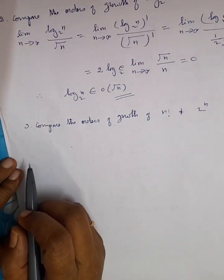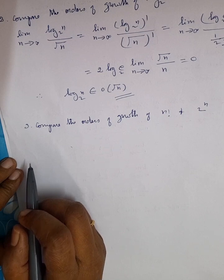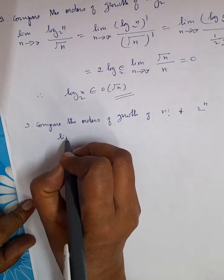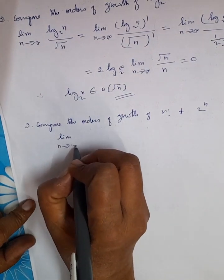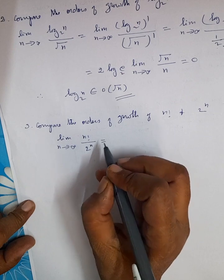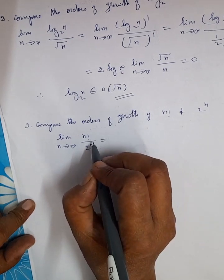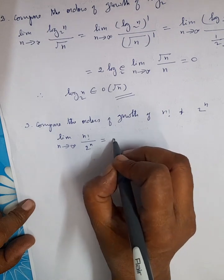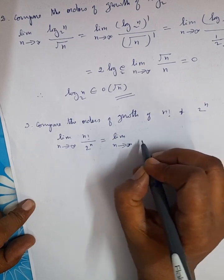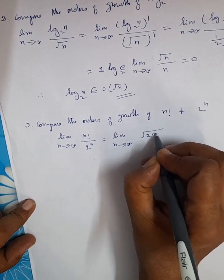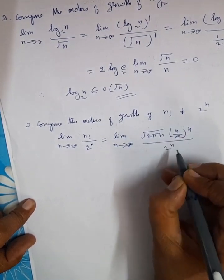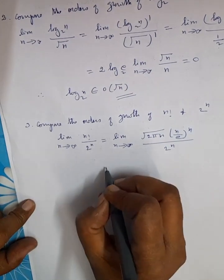Now the third example is to compare the orders of growth of n! and 2ⁿ. We evaluate limit n tends to infinity of n!/2ⁿ. In place of n! we are going to apply Stirling's formula, where n! equals √(2πn) · (n/e)ⁿ, divided by 2ⁿ.